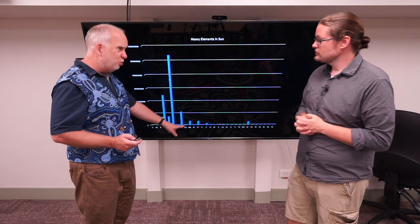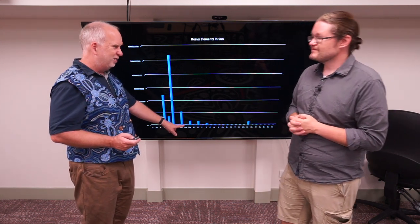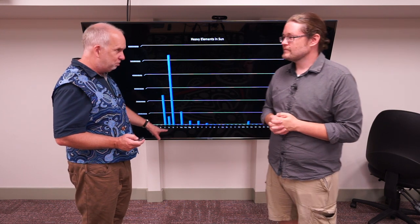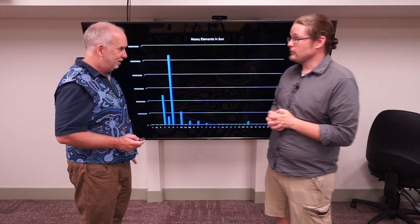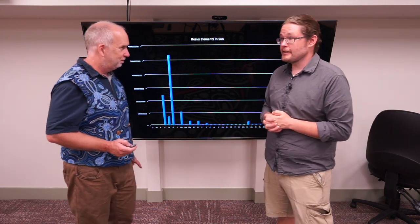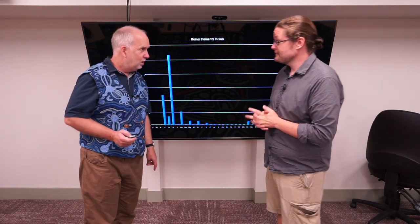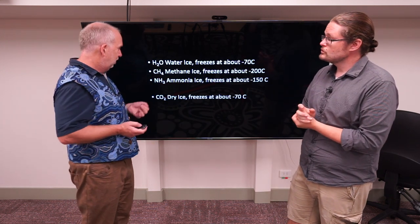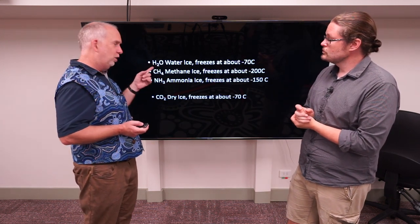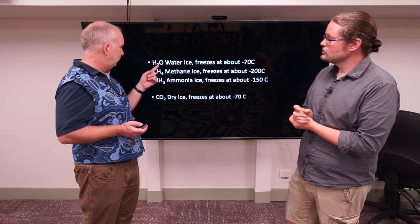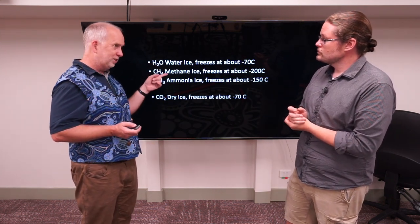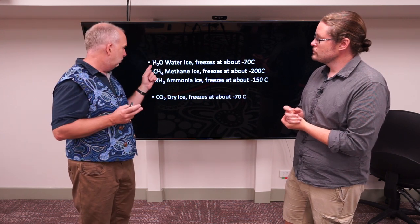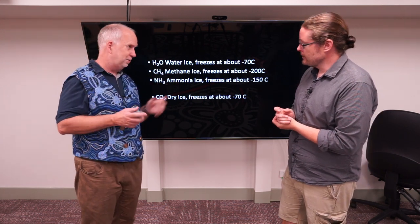Neon's not going to do very much — it's inert, it's not going to combine with anything. But nitrogen will also combine with hydrogen, so we can get things like ammonia. So what's going to happen is you're going to start getting the oxygen in this cloud combining with the super-abundant hydrogen to make water ice.